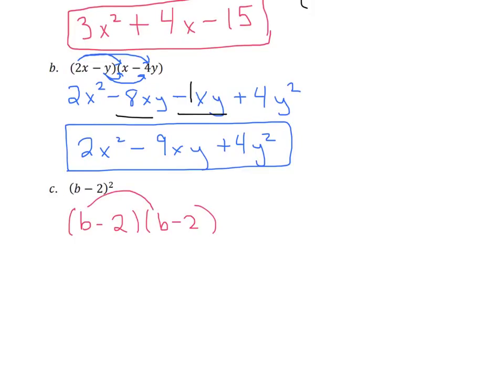Now b times b is going to be b squared. b times negative 2 is negative 2b. Negative 2 times b is, again, negative 2b. And then negative 2 times a negative 2 is a positive 4.